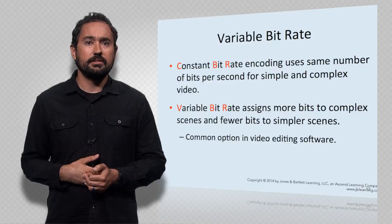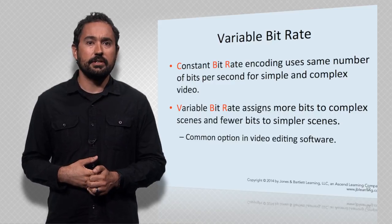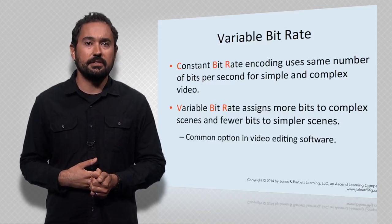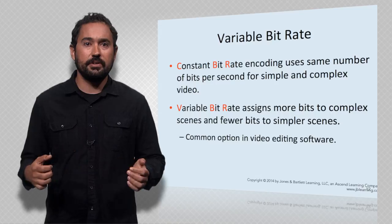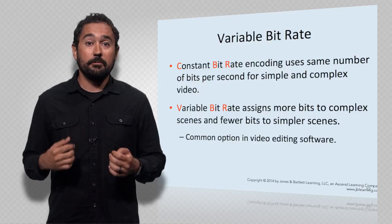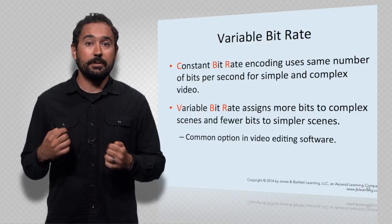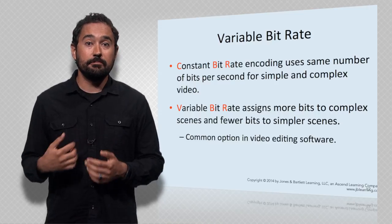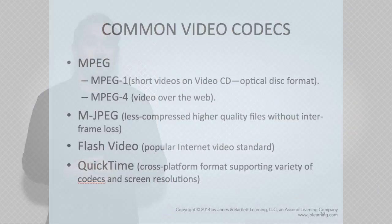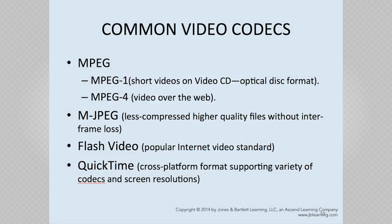The last compression strategy we will review is variable bitrate coding, which includes two approaches: constant bitrate, or CBR, where it assigns the same number of bits per second to all parts of the video; and variable bitrate, where it assigns more bits to complex scenes and fewer bits to simpler scenes. The most popular codecs are MPEG-4, or MP4, and QuickTime.